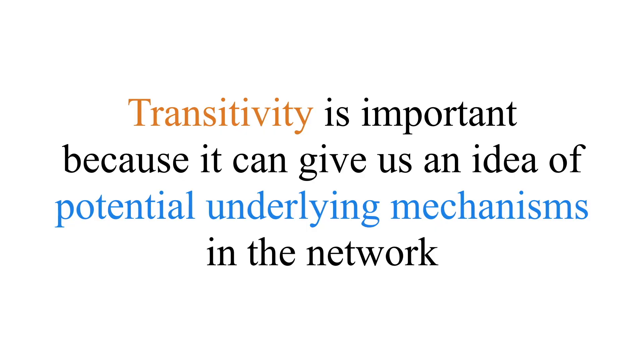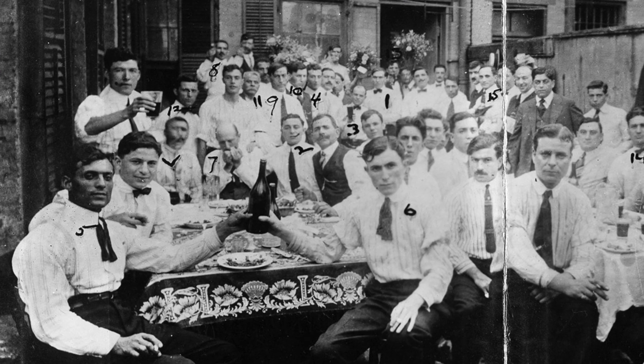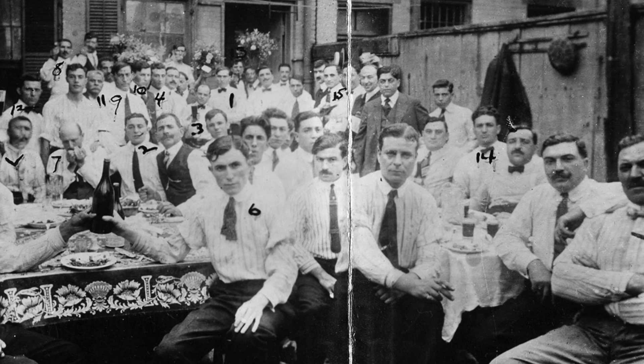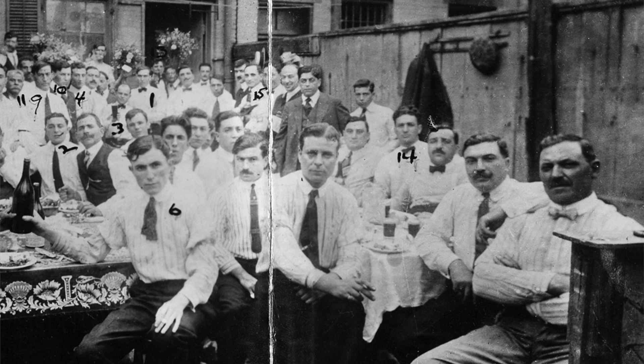Transitivity is important because it gives us an idea of potential underlying mechanisms in the network. We see high transitivity when there's mutuality — a win-win situation, or shared costs. For instance, the mafia has high transitivity because I know you, you know me, we all know each other, and if anything goes awry we know who to punish. Or we have a common enemy: an enemy of an enemy means we're friends, banding together in response to a common threat.